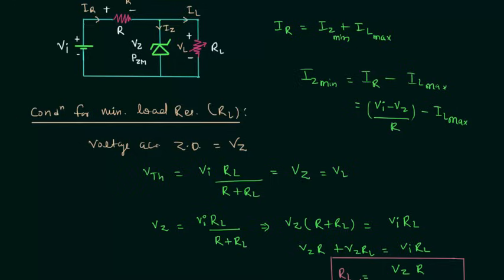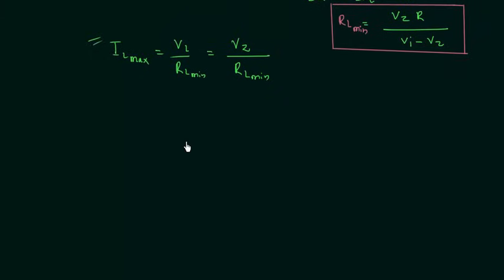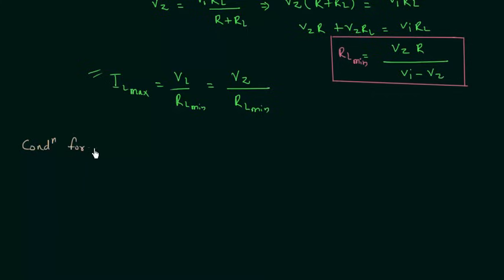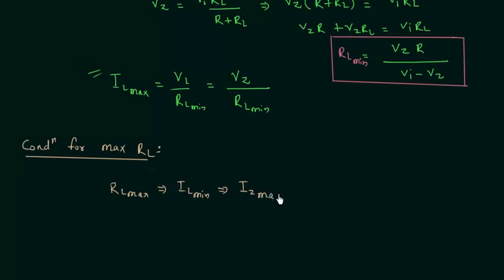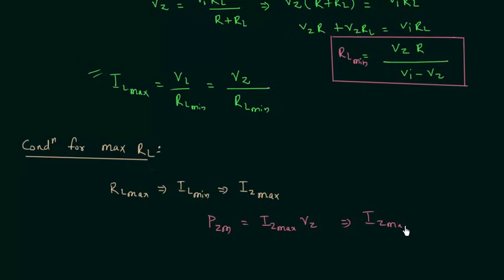This is all for the first condition. Now we will move to the second condition to find out the condition for maximum load resistance. When load resistance is maximum, this implies load current is minimum, and when load current is minimum, this implies Zener current is maximum. We already know Pzm is the maximum power dissipation capability of the diode and it equals IZ maximum multiplied by Vz.